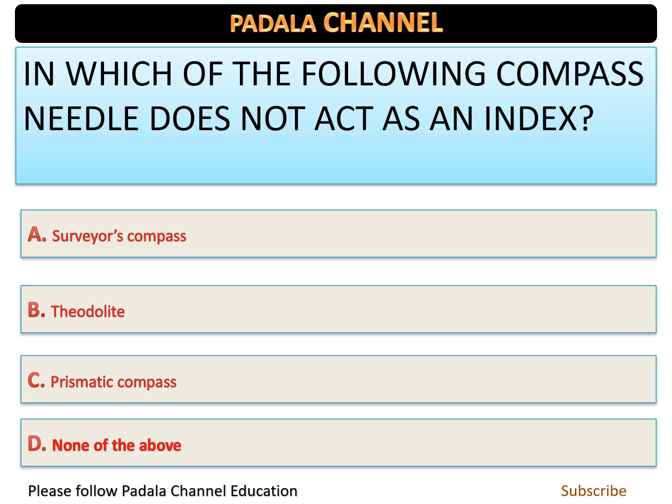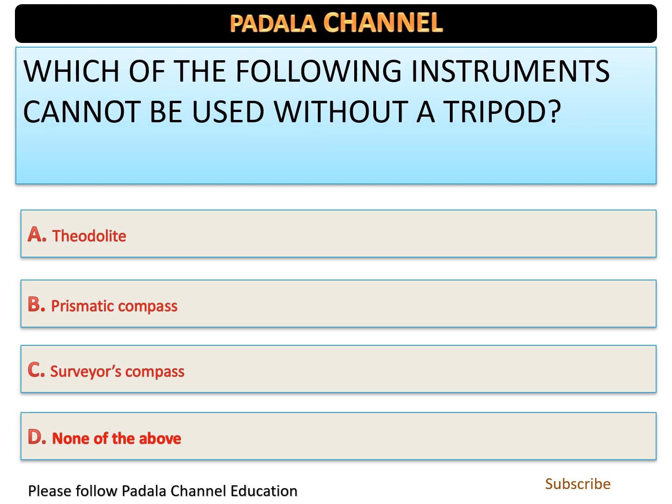In which of the following compass does the needle not act as an index? Options: A — surveyor's compass, B — theodolite, C — prismatic compass. The correct answer is the prismatic compass — the needle does not act as an index in the prismatic compass.